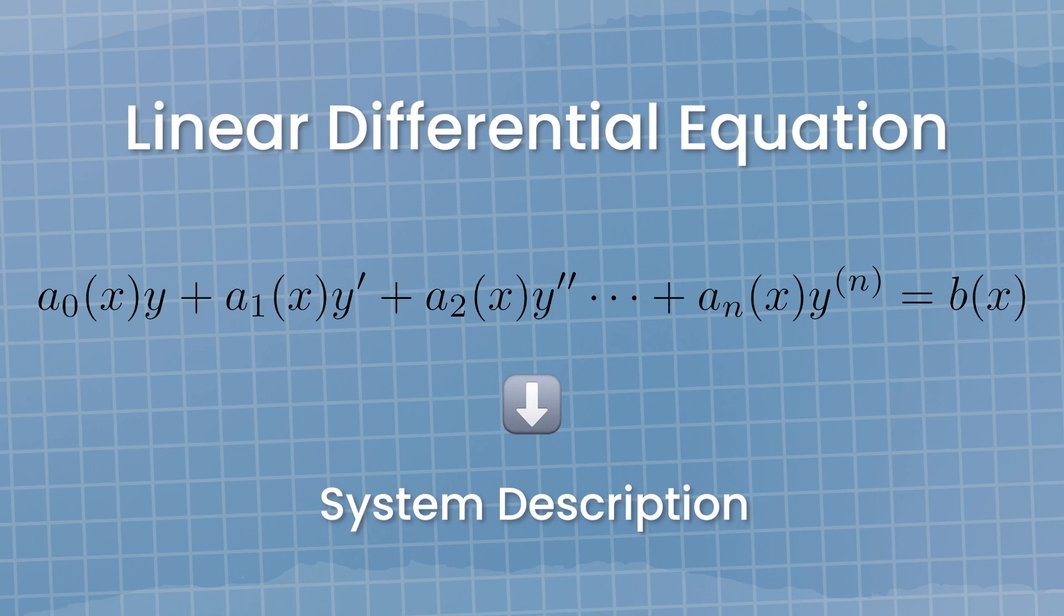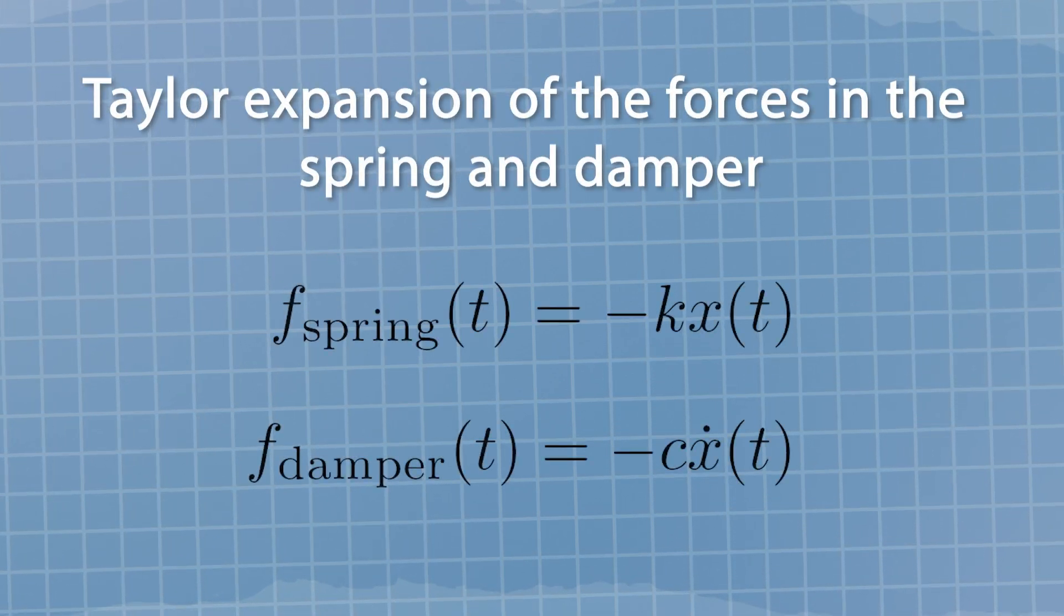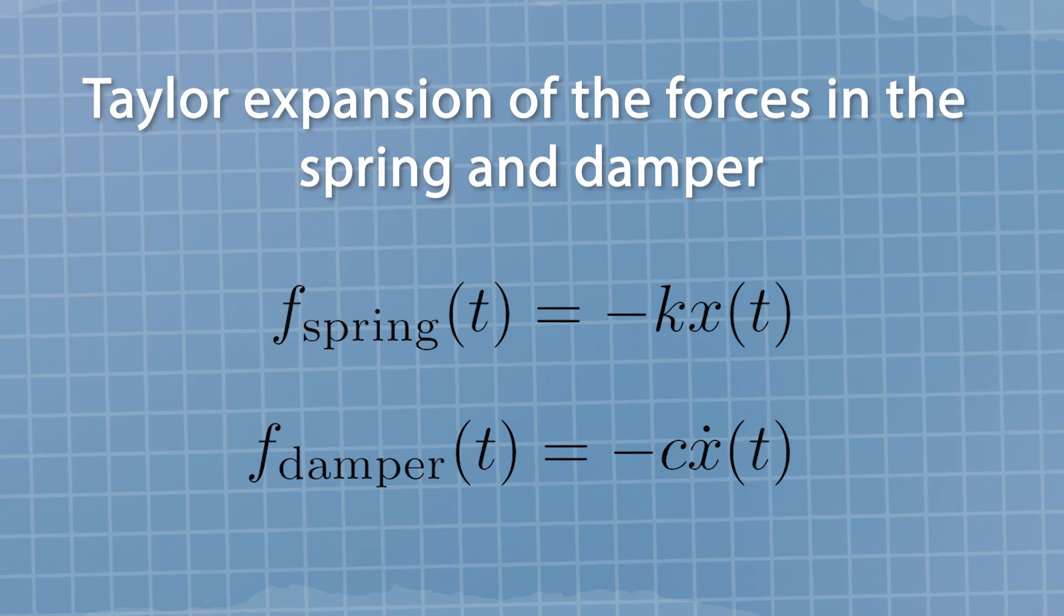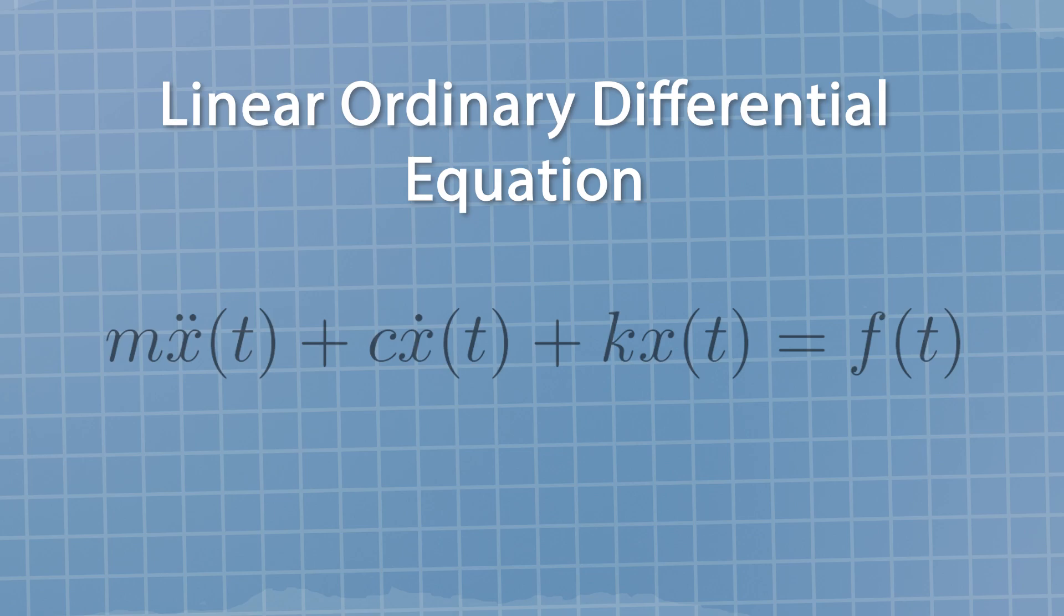To proceed, we assume the block will not move very far away from its equilibrium point and also it won't be moving very fast. This allows us to keep only the first term in the Taylor expansion of the function describing the force in the spring and the damper. In this way, we find the linear ordinary differential equation of the second degree we were looking for.